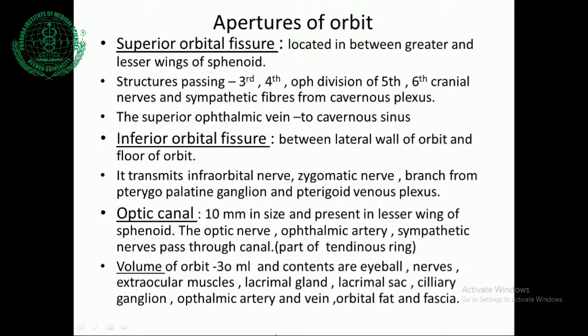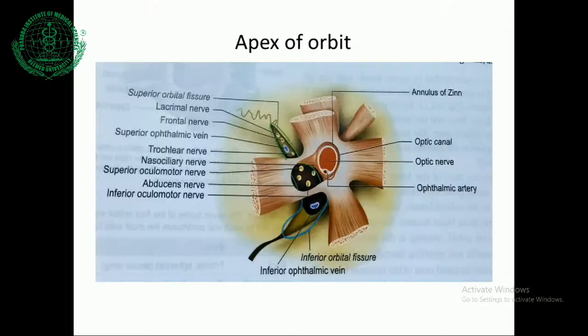The optic canal is around 10 mm in size and present in the lesser wing of the sphenoid. The optic nerve, ophthalmic artery, and sympathetic nerves pass through the canal. It is part of the tendinous ring. Volume of the orbit is approximately 30 ml, with the eyeballs making one-fifth of that volume. Other structures include nerves, extraocular muscles, lacrimal gland, lacrimal sac, ciliary ganglion, ophthalmic artery and vein, and orbital fat and fascia. This figure shows the superior orbital fissure, inferior orbital fissure, optic canal, and the tendinous ring with four recti muscles.